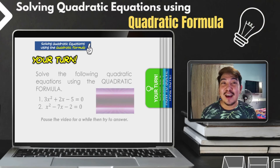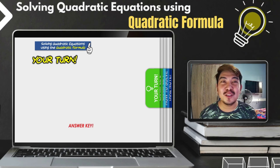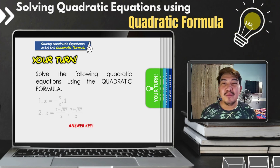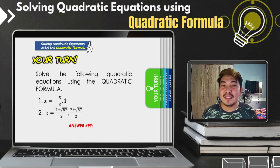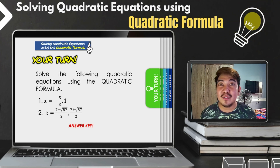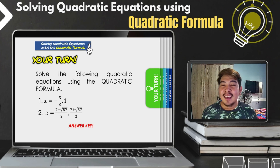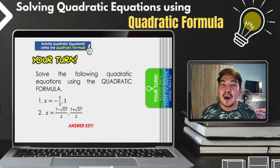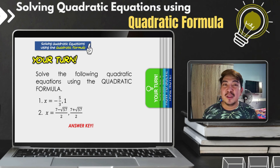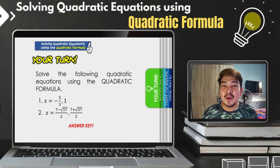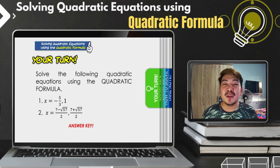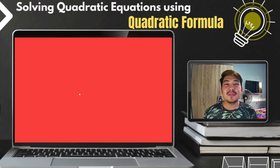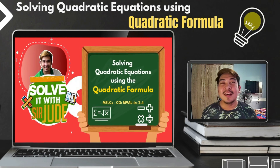Let us now check your answers. For number one, the answer is x equals negative 5 thirds and x equals 1. For number two, the answers are x equals 7 minus square root of 57, all over 2, and x equals 7 plus square root of 57, all over 2.